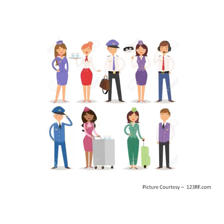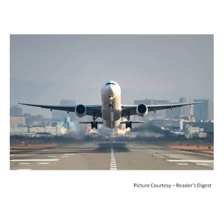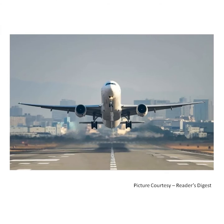The place where the pilot sits in the plane is called a cockpit. Cabin crew and air hostesses look after the passengers in the plane. An airplane needs a runway to take off and land on the ground. The airport is the place where planes stop.